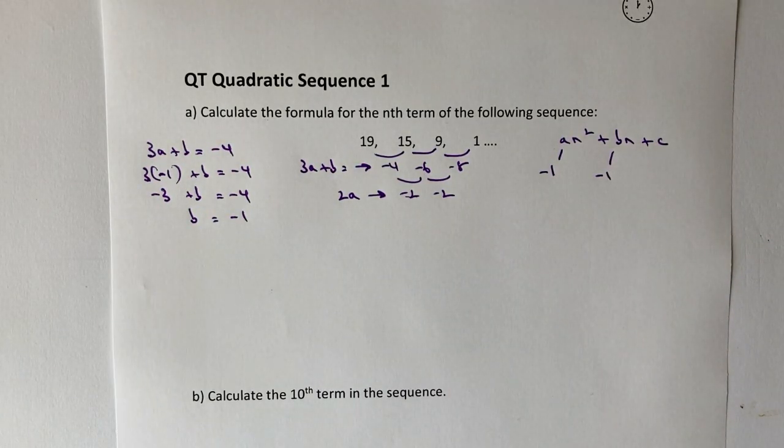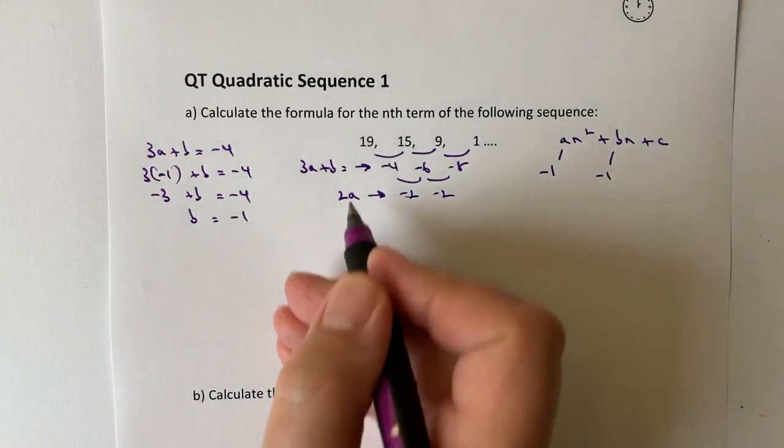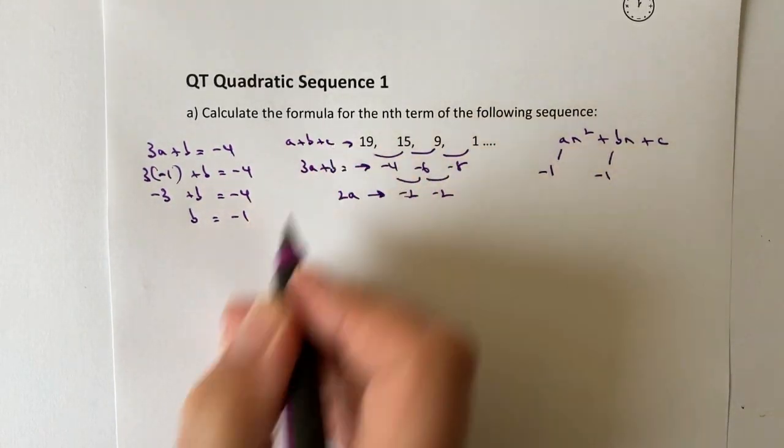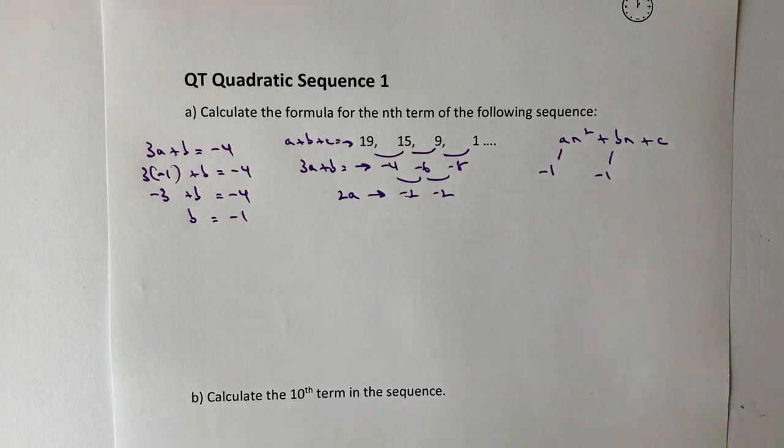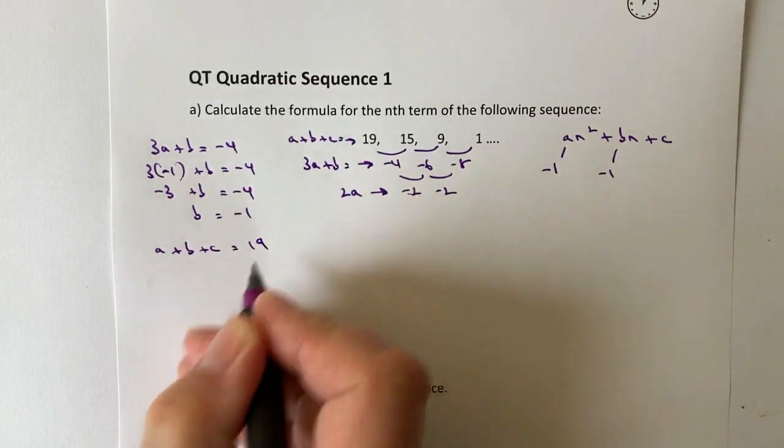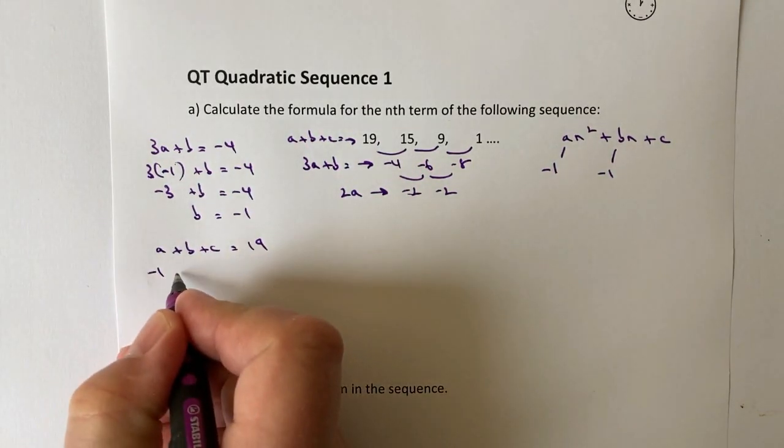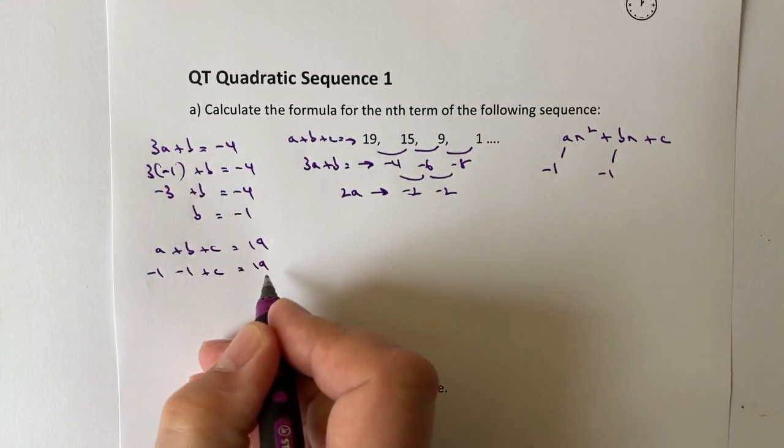The final little piece of the jigsaw is to figure out the value of c. Now in this particular case, my next formula I use is a plus b plus c equals 19. So let's calculate that. I've got a plus b plus c equals 19. Now I've got my two values of one value of a and one value of b, so I can plug those straight in. a is minus 1, and then b is minus 1 as well, plus c equals 19.